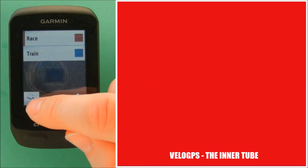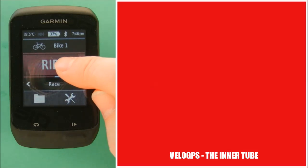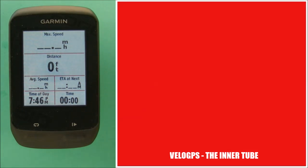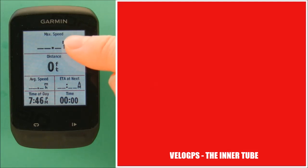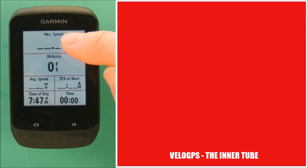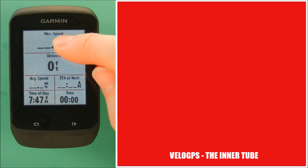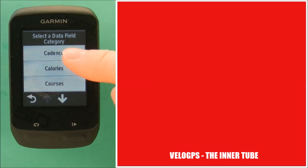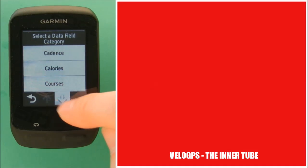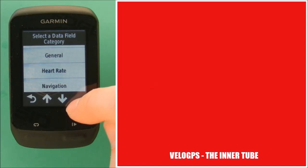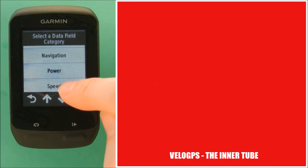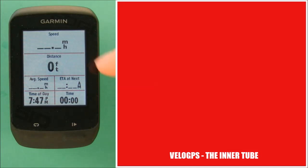If we now come back out of all these screens and find our way back to the main menu and select the ride option, you'll see here this was page number one that we set up with our six data fields. A neat little trick: if you don't want to go all the way back through the training pages options to adjust just one field, you can simply touch and hold until it highlights, and when you release it will take you straight into the data field category screen. So where we had maximum speed set, we can go back into the speed category and reselect plain speed.